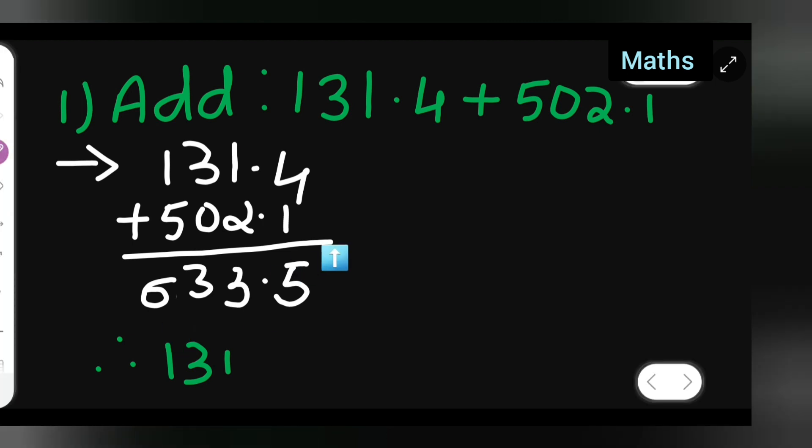131.4 plus 502.1 is equal to 633.5. So I hope you'll have understood how to add given numbers with a decimal point. Thanks for watching.